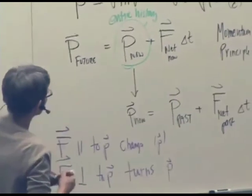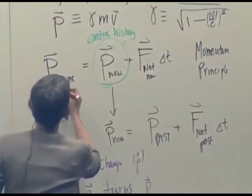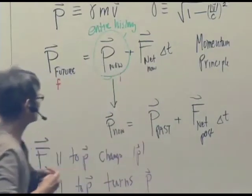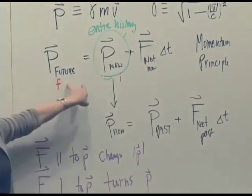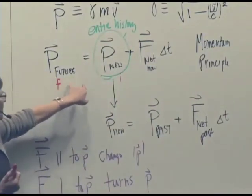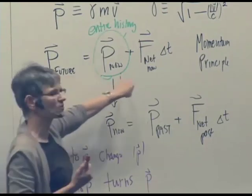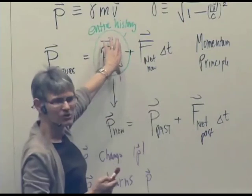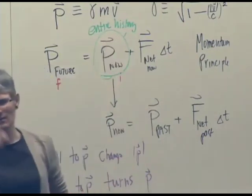But often, of course, this is written with the subscript final and initial. But I think it's actually important to think of it as the momentum of something in the future, the momentum now. And remember that the whole history of the object is added up there.